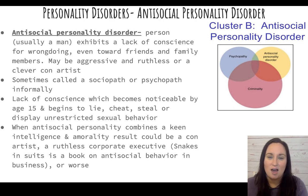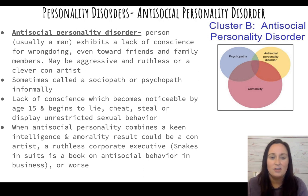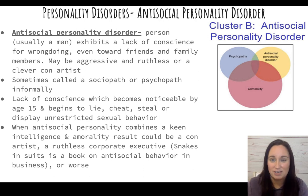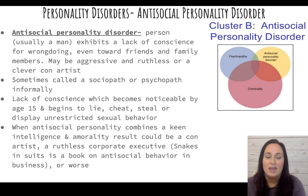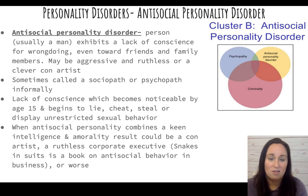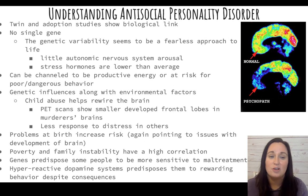Antisocial personality disorder typically starts around age 15, with the person beginning to lie, cheat, steal, or display risky and unrestricted sexual behaviors. When combined with high intelligence and low morality, it can go badly. Twin and adoption studies show a biological link, though there is no single gene responsible.